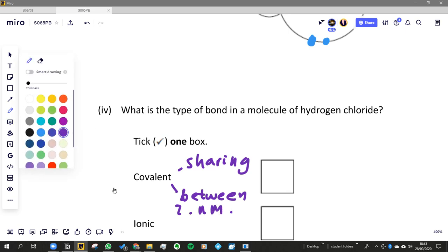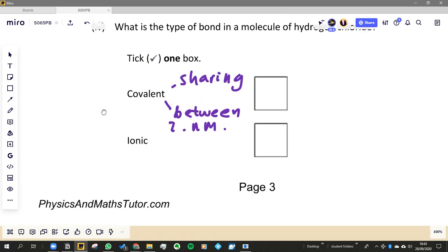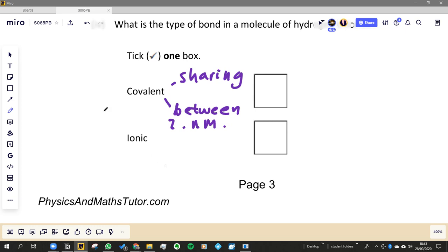Between two non-metals for covalent. Ionic is making ions, so it's giving and receiving electrons. Ions - it's going to be losing and gaining electrons.